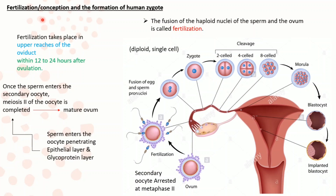Fertilization, or the conception and the formation of the human zygote. During ovulation, a secondary oocyte arrested at metaphase 2 enters the oviduct. There is a glycoprotein layer present between the oocyte's plasma membrane and the surrounding cells. During fertilization, a sperm enters the secondary oocyte, penetrating the epithelial cells surrounding the oocyte and the glycoprotein layer. Once the sperm enters the secondary oocyte, meiosis 2 of the oocyte is completed, forming a mature ovum.